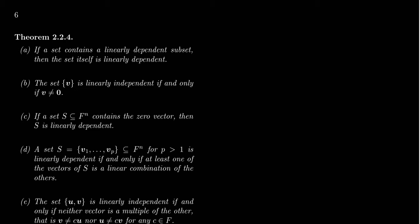In previous videos, we've learned how by row reducing a matrix, we can determine whether a set of vectors is linearly independent or linearly dependent. Row reducing a matrix takes some time—there's a calculation involved. There are some simple checks that one can do to determine independence or dependence of a set of vectors very quickly.